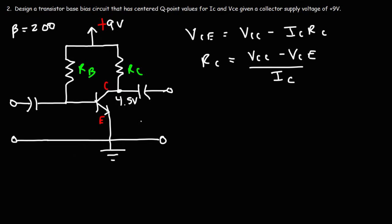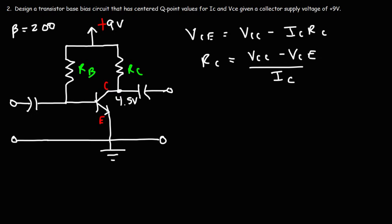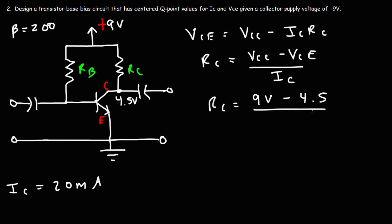The potential between the collector and emitter will be 4.5 volts if we want it centered properly. We then choose a value for IC — it doesn't matter what we choose, it will automatically be a centered Q-point value. We don't want IC too high as it can burn the transistor, so we set it to 20 milliamps. RC equals (9 minus 4.5) divided by 20mA, giving 0.225 kΩ, which is 225 Ω.